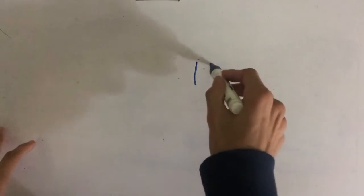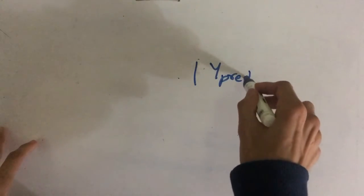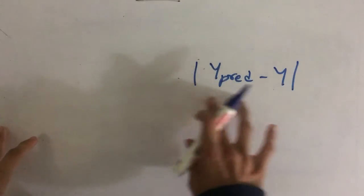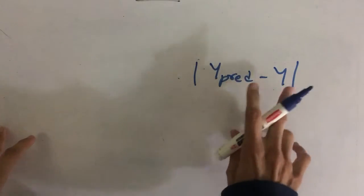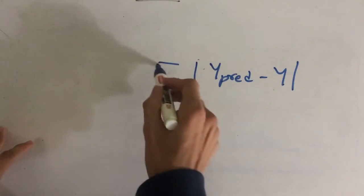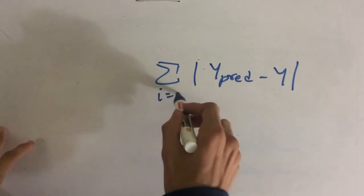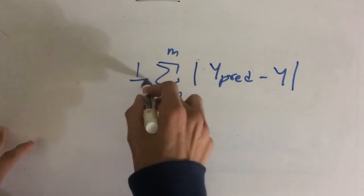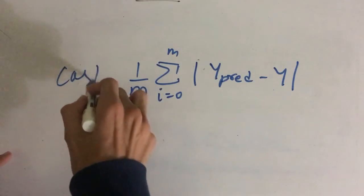Now as the cost function is the error representation, we can represent our error by subtracting our predicting value with the actual value. This will be the error for only one observation. If we have 10 observations, we can just take the average of all those 10 observations, and this could be our cost function.